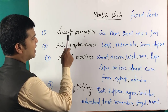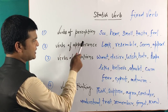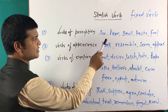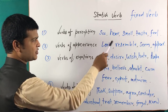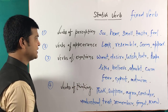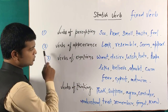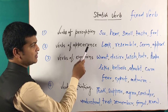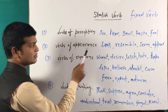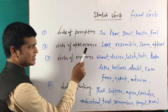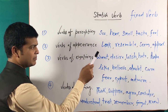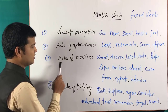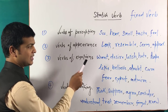Category 1: Words of perception — see, hear, smell, taste, feel. Category 2: Verbs of appearance — look, resemble, seem, appear.